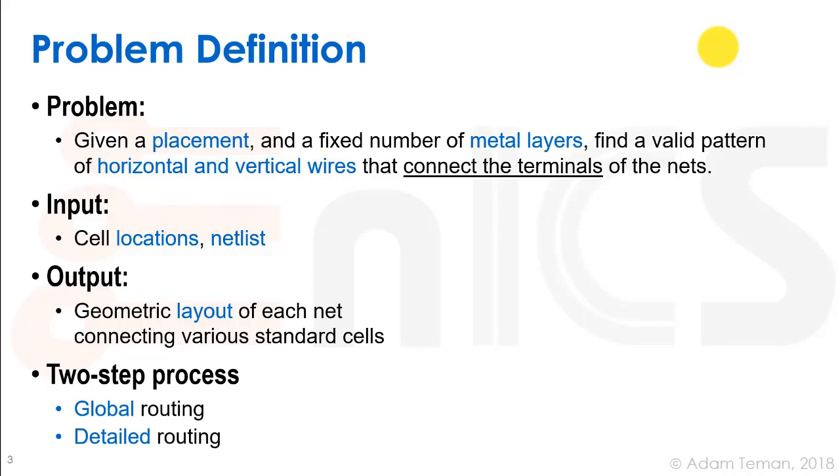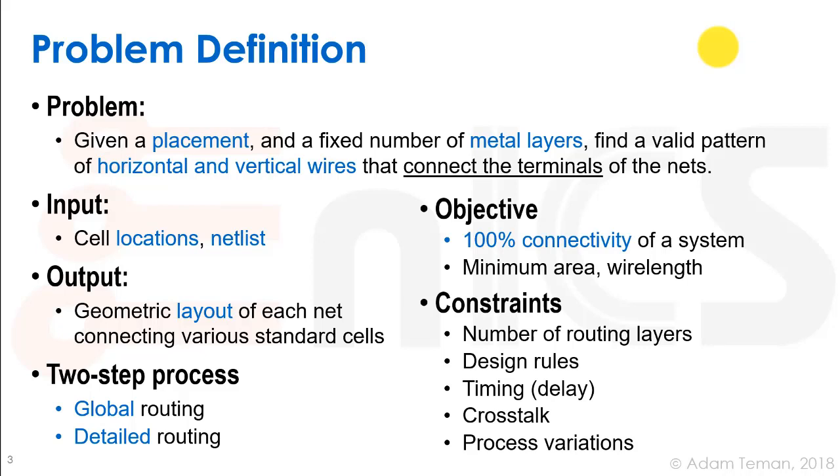We do this as most of our algorithms do in a two-step process. We start with something we call global routing, then we'll go into detailed routing. Our objective is first of all what we have to have. We have to have 100% connectivity of the system. We need to get to a point where every single net in our netlist is connected to its relevant pins, and we want to do this with minimum area and minimum wire length.